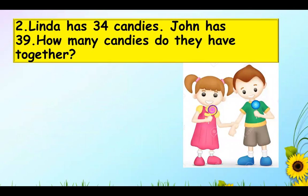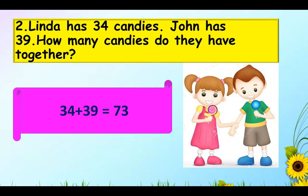Linda has 34 candies. John has 39. How many candies do they have together? We will do 34 plus 39 equals 73. So they have 73 candies all together.